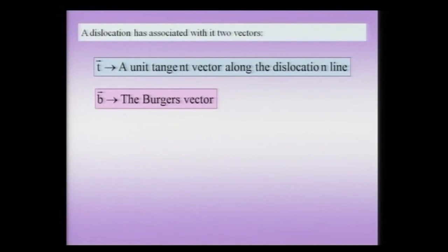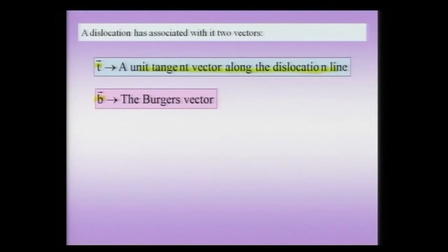When we talk about dislocations, there are two important vectors associated with them. The two important vectors are the line vector t and the Burgers vector b. The Burgers vector is perhaps as cardinal to a dislocation as you can think — a dislocation is born with the Burgers vector and expresses it even in its death. The entire life of a dislocation, even before its birth to its death, has this Burgers vector as its signature. The t vector is a unit tangent vector along the dislocation line, and for a straight dislocation line the t vector is constant.